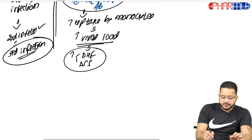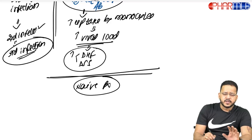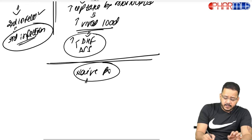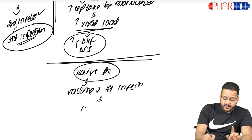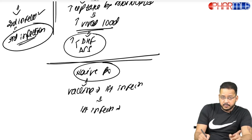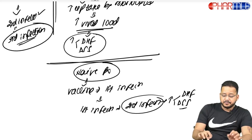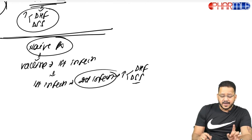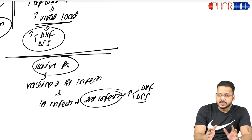If I give the vaccine to a naive patient who has never had any dengue infection, my vaccine will behave as a first infection. Then when the actual first infection occurs, it will behave like a second infection, resulting in a high risk of dengue hemorrhagic fever or dengue shock syndrome. That is why Dengvaxia must not be given to dengue-naive patients.